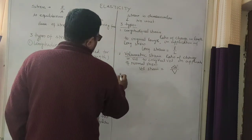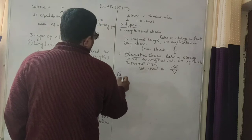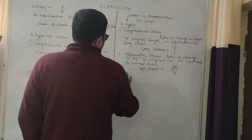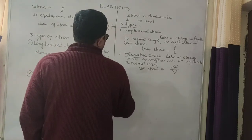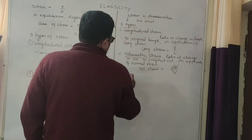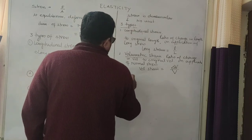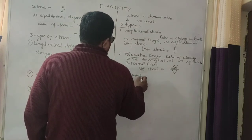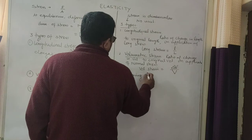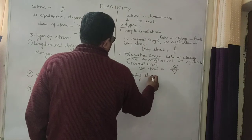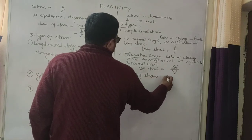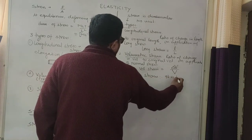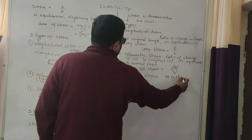The third type of strain is shearing strain. It is the angular change in the shape of a body when tangential stress or shearing stress is applied.